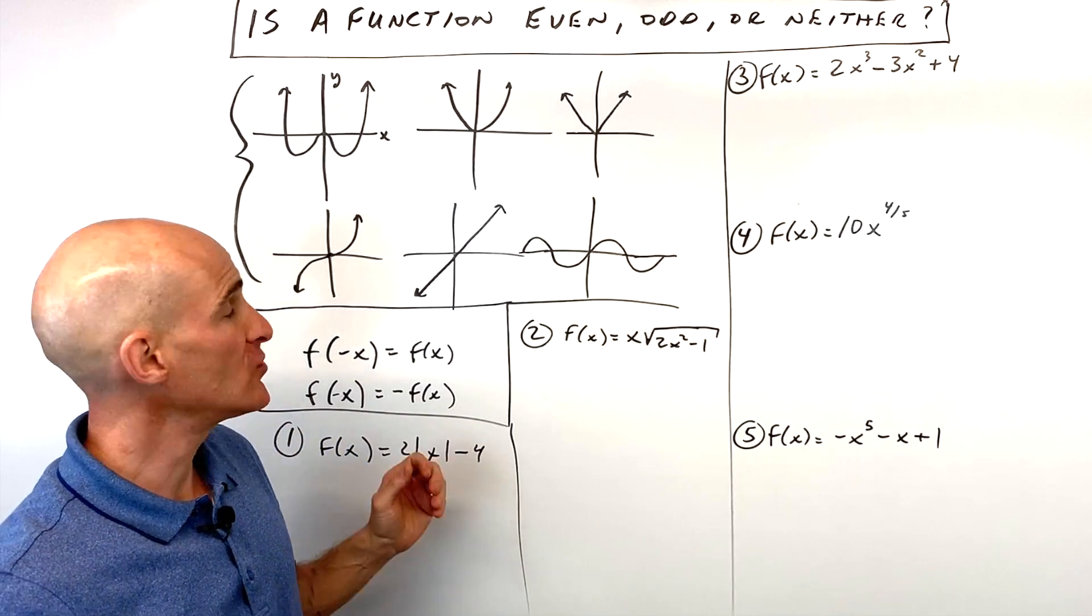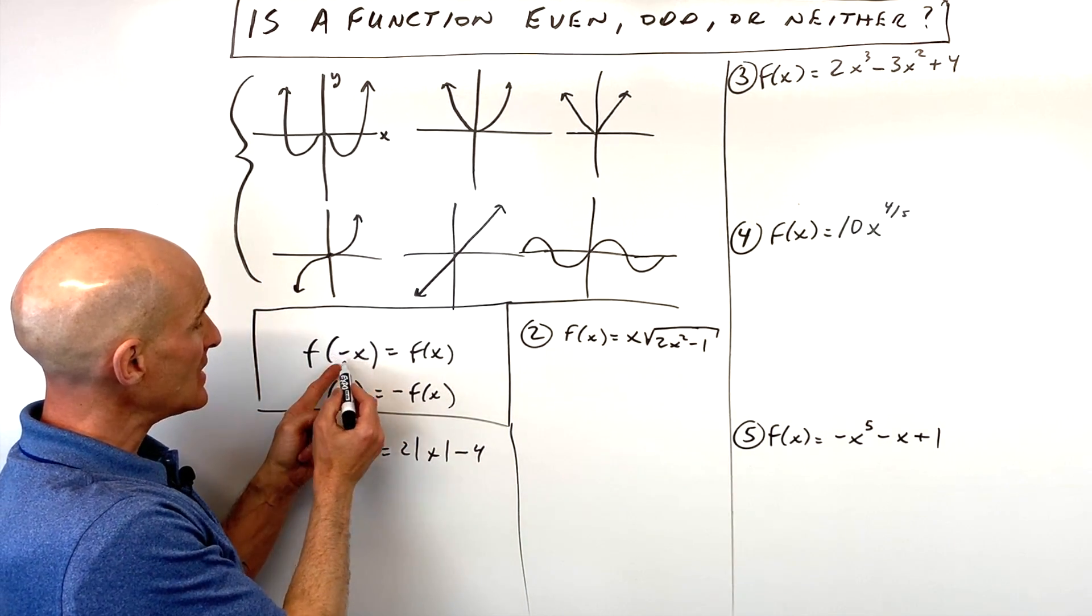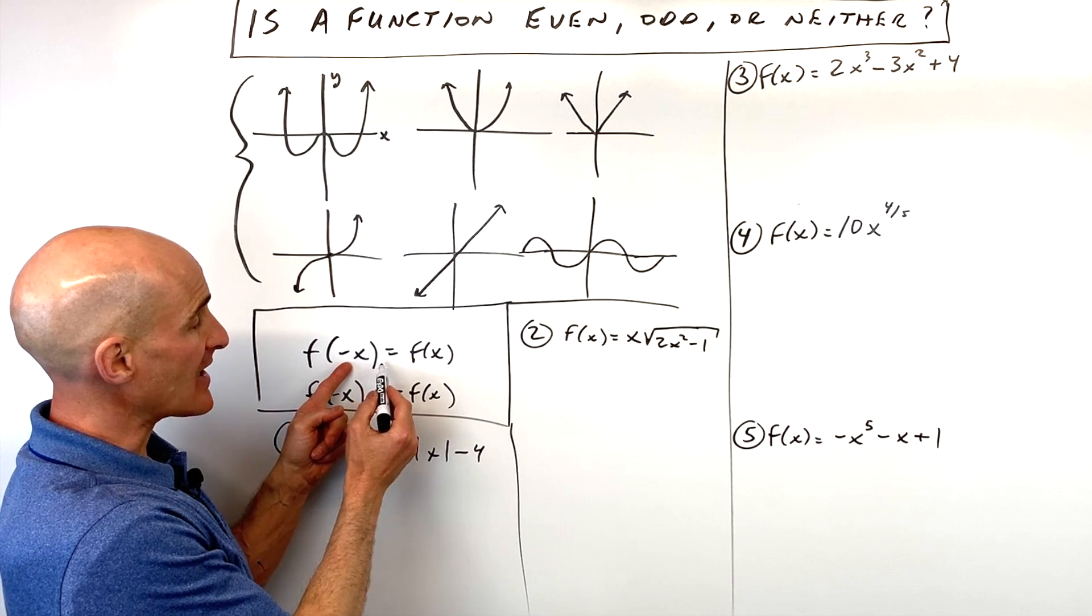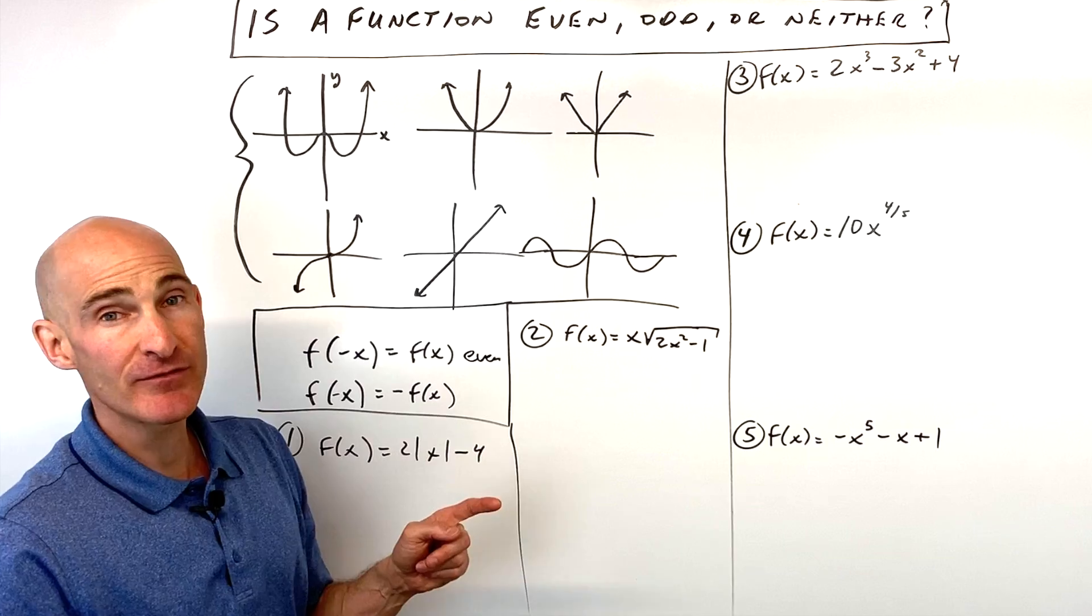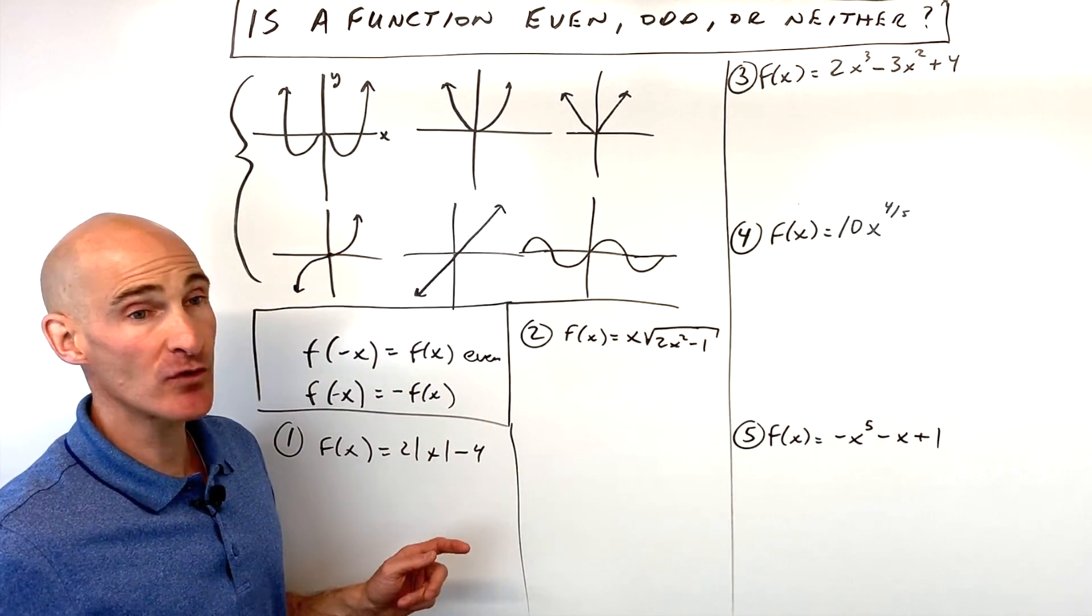But algebraically, the way you test it is you put negative x into your function, in place of x on the right side. If you get the original function back, then we call this an even function, meaning if you graph it, it's going to be a reflection over the y-axis.